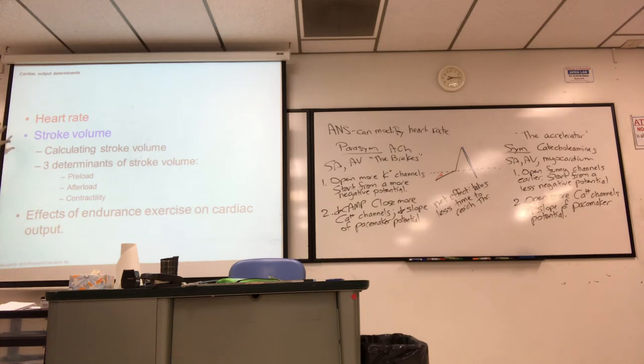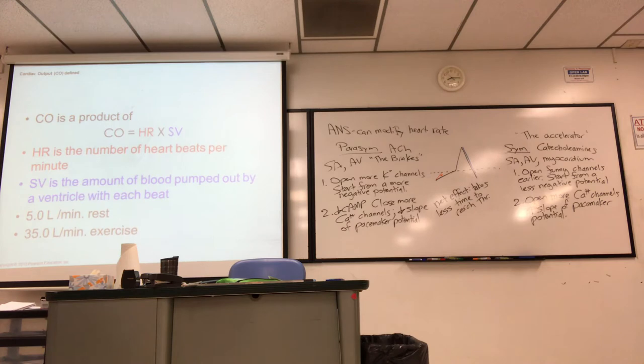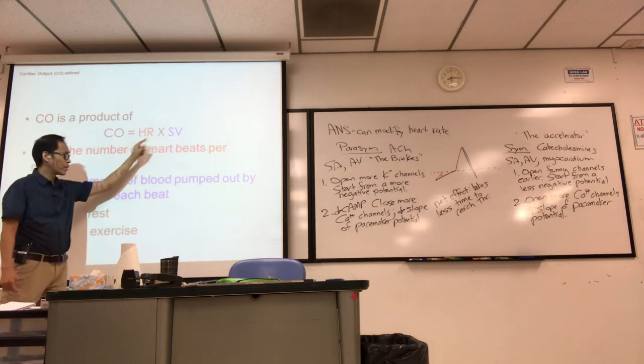I have these two things colored because cardiac output is a product of heart rate multiplied by the stroke volume. So we'll learn how to calculate it. We'll spend a lot of time talking about some concepts related to stroke volume. Simply put, cardiac output, you must multiply the heart rate and the stroke volume. Heart rate is the number of beats per minute, and as we just said, you can modify that, right, with the accelerator or the brakes.